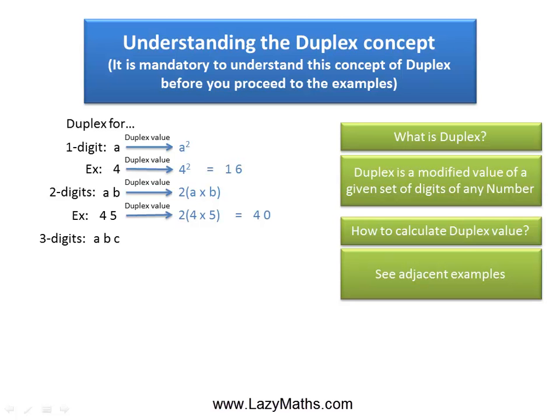If it's a three digit number, like A, B and C, the duplex value is going to be 2 times A times C, which means product of the two digits which are in the first and the last position, and square of the middle digit, which is B squared, and sum of all of these values.